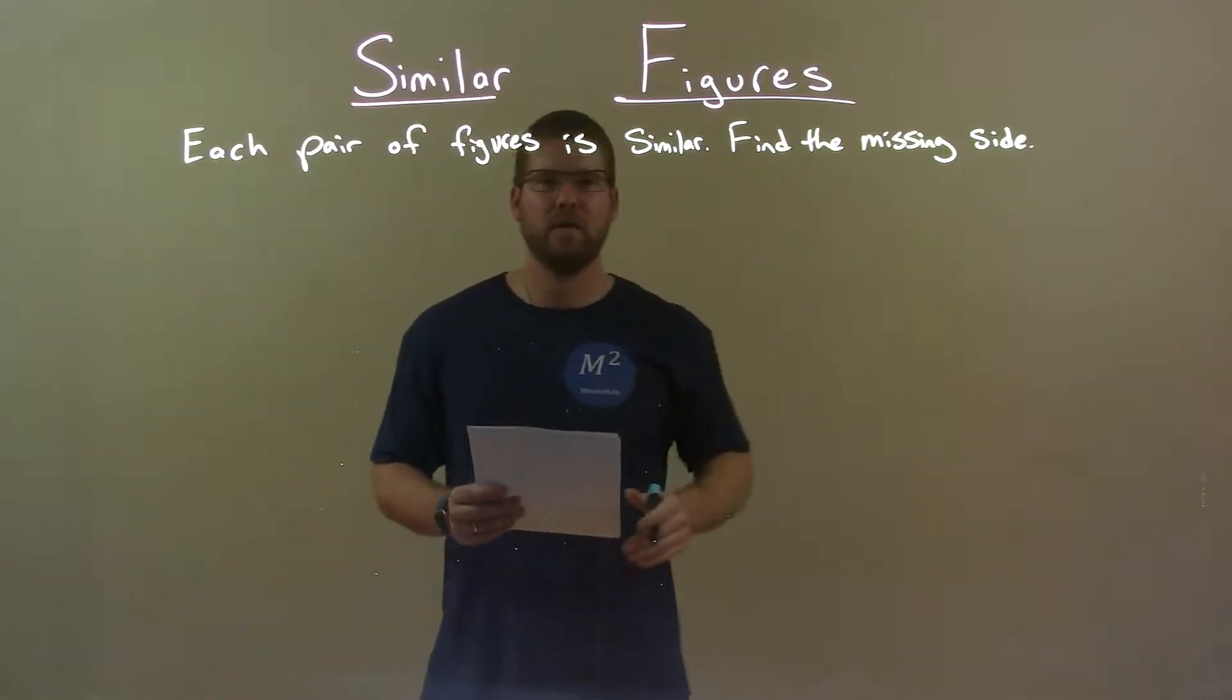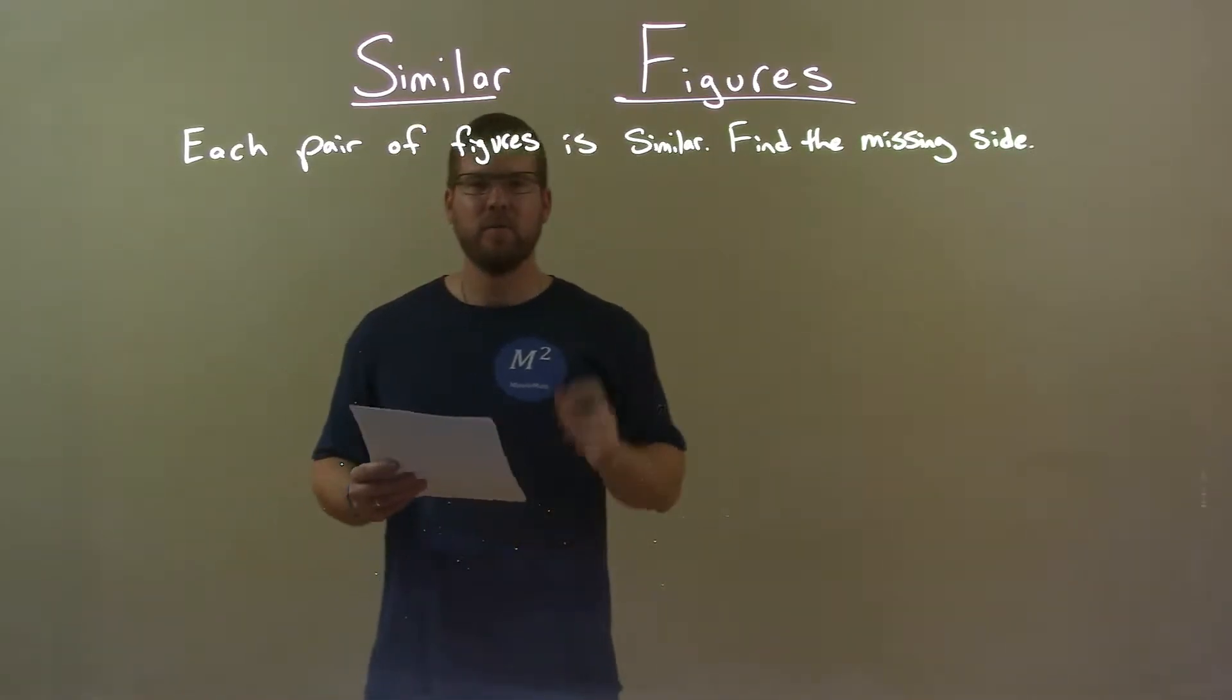Each pair of figures is similar. Find the missing side. So, if I was given these triangles,